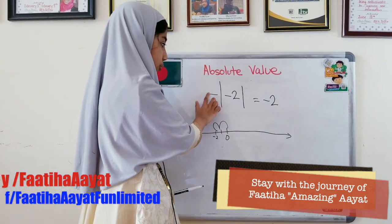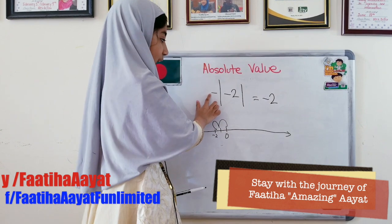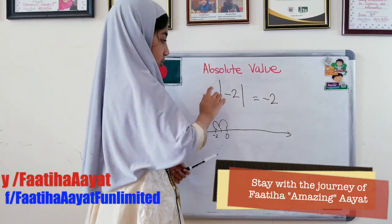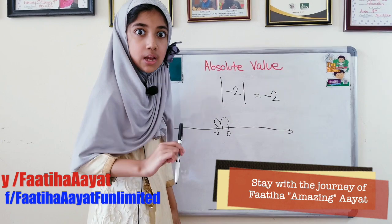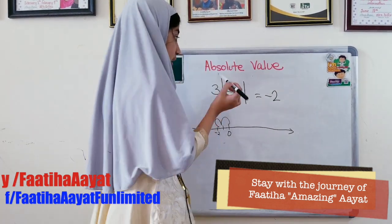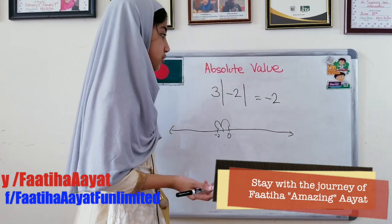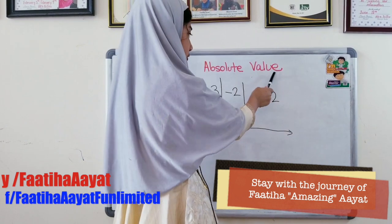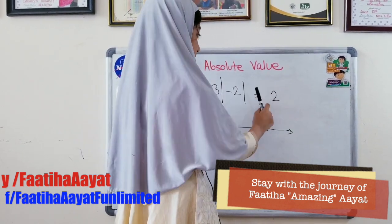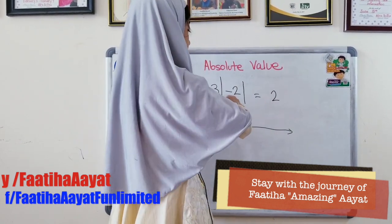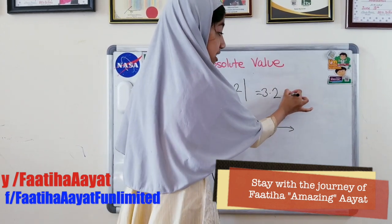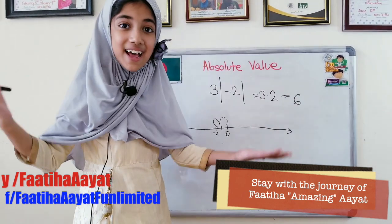Now, let's say that we don't have the minus right there. What if we have a number right there instead of a sign? Like, for example, the number 3. What will we do then? So, the absolute value of minus 2 is 2, right? And we will multiply that with the 3. So the answer will be 6. Ta-da!